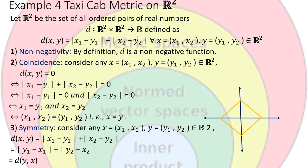For x equals (x1, x2) and y equals (y1, y2) in R2, d(x,y) equals modulus of (x1 minus y1) plus modulus of (x2 minus y2). The modulus will not be impacted if we interchange x1 and y1, so it equals modulus of (y1 minus x1) plus modulus of (y2 minus x2), which gives d(y,x). So the three properties are satisfied. Last is to check the triangle inequality.